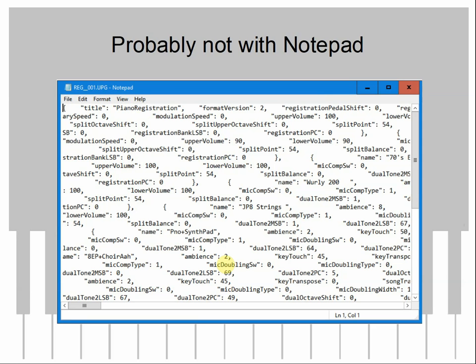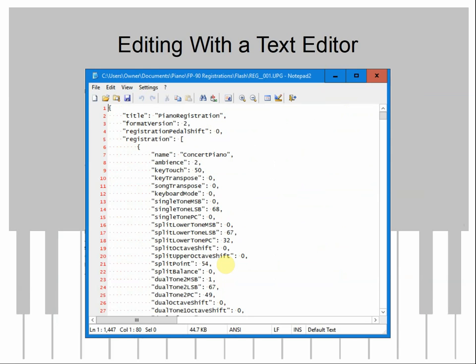Just about any decent text editor will cope with the Linux line feeds. I use Notepad++ or Notepad 2, and as of end of May 2018, Microsoft promises that after only 25 years they will upgrade Notepad to handle these line endings as well. In Notepad 2 you can see something that looks like this — if you're a geek like me, you'll recognize it's a JSON file, though that doesn't really matter for our purposes. You can see for each registration a name — like 'concert piano' — along with a whole bunch of settings we'll go through later.